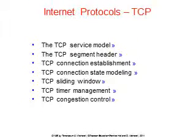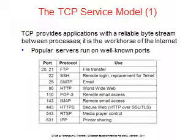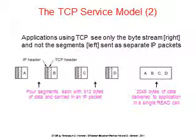TCP Protocol. TCP provides applications with a reliable byte stream and is the workhorse of the internet. Some popular TCP-based protocols — and their port numbers are important to know — include FTP, SSH, SMTP, HTTP, POP, IMAP, HTTPS, RTSP, and IPP. This is especially important for network administrators, who may need to block or open certain ports. The TCP connection is a byte stream, not a message stream — this is an important distinction. For example, if the sending process does four 512-byte writes to a TCP stream, the data may be delivered as 512-byte chunks, two 1024-byte chunks, one 2048-byte chunk, or some other grouping. There is no way for the receiver to detect the original write units.